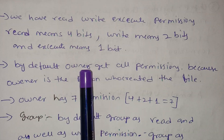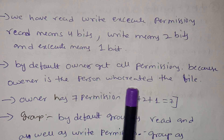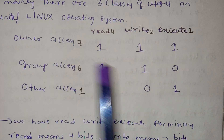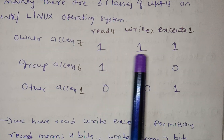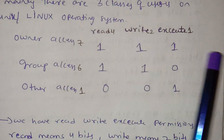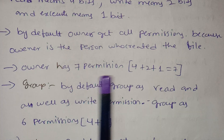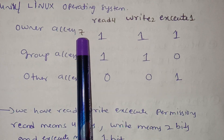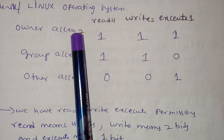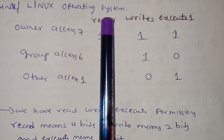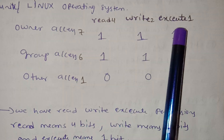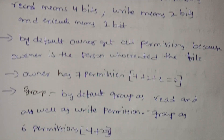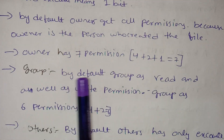By default, the owner gets all the permissions because the owner is the person who created the file. The owner has seven permissions: read is 4, write is 2, execute is 1 — 4 plus 2 plus 1 equals 7. So the owner has 7 permissions.